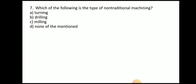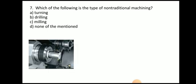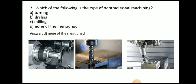Next question: which of the following is a type of non-traditional machining? The answer is none of the mentioned. The options are turning, drilling, and milling — all of these are not types of non-traditional machining. Here you can see the turning process, the milling process, and the drilling process.